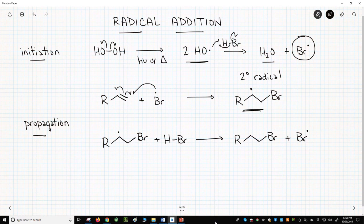The second step involves abstraction of a hydrogen atom from HBr by the carbon radical. That forms the final addition product and regenerates our propagating radical, Br dot.